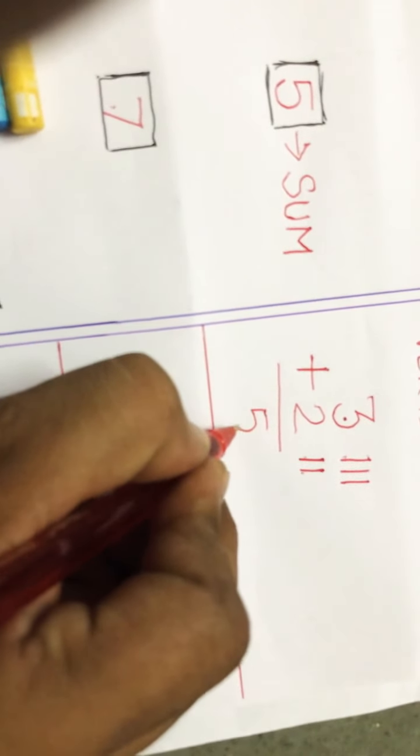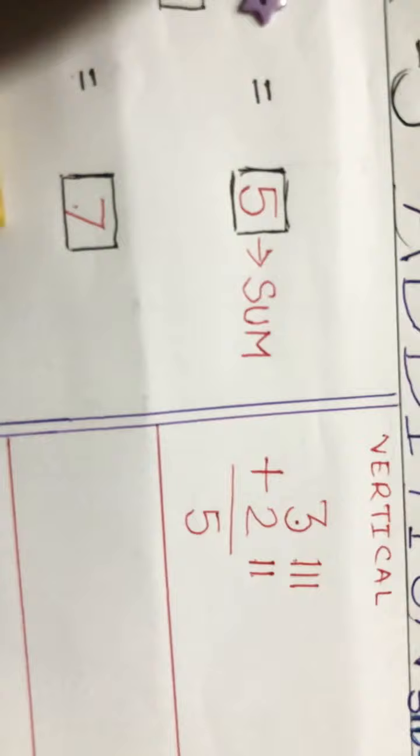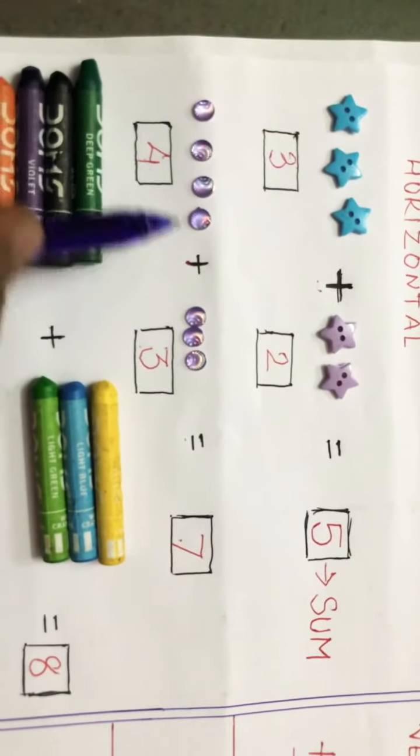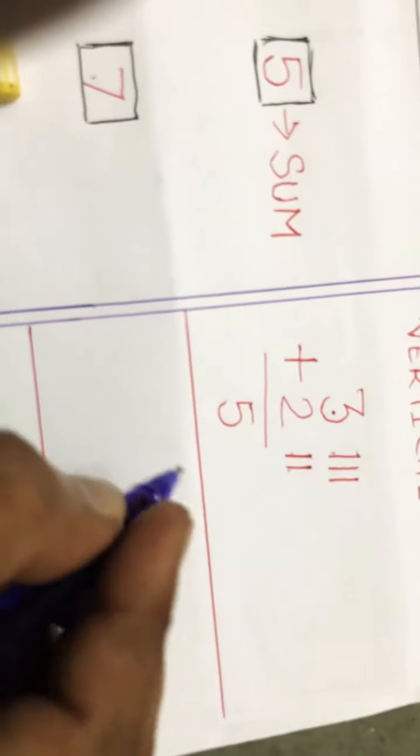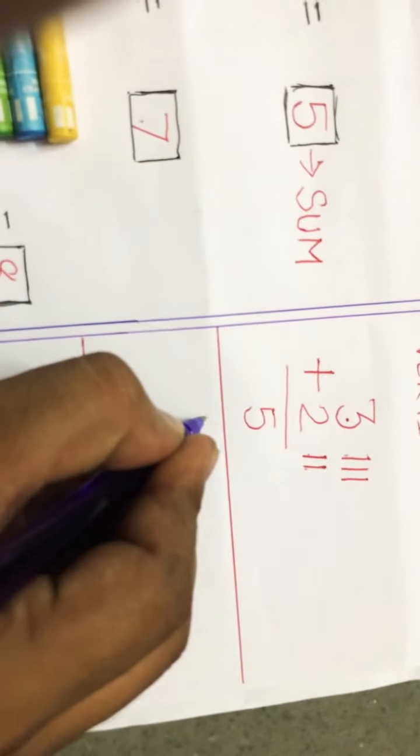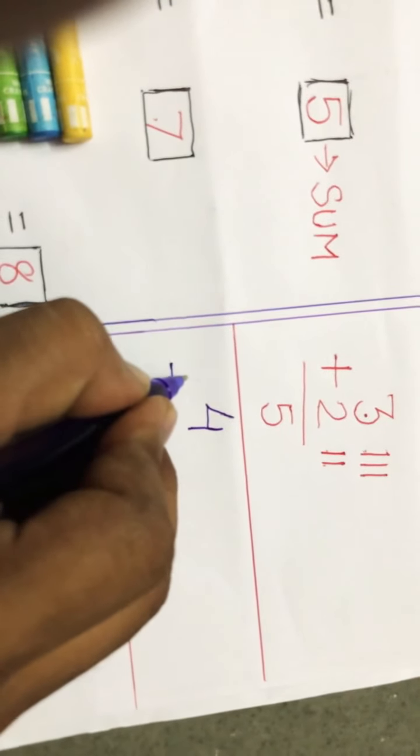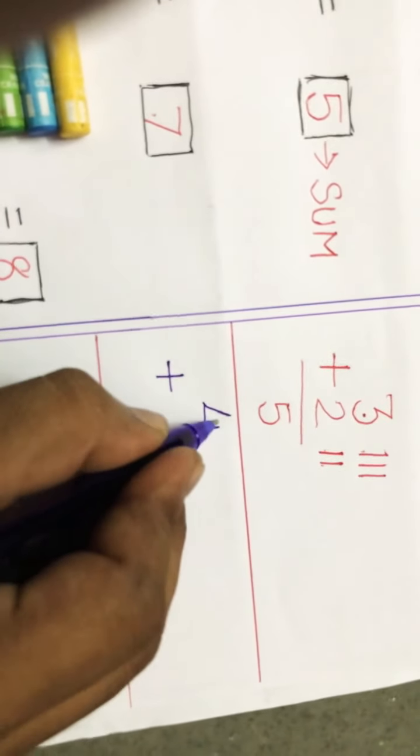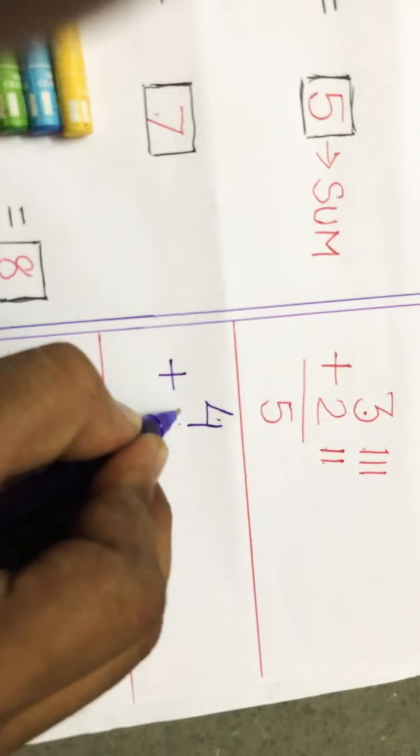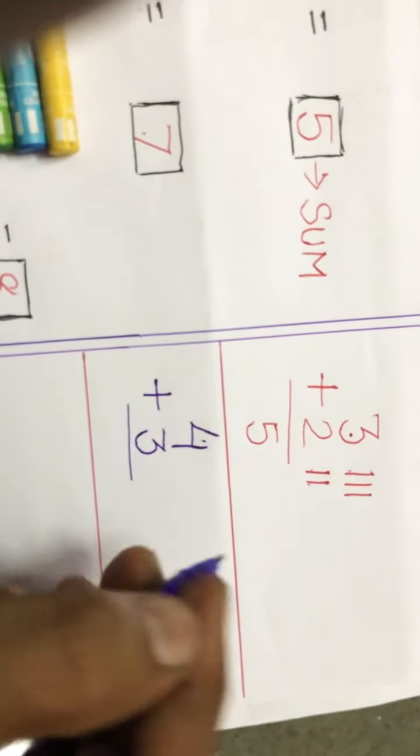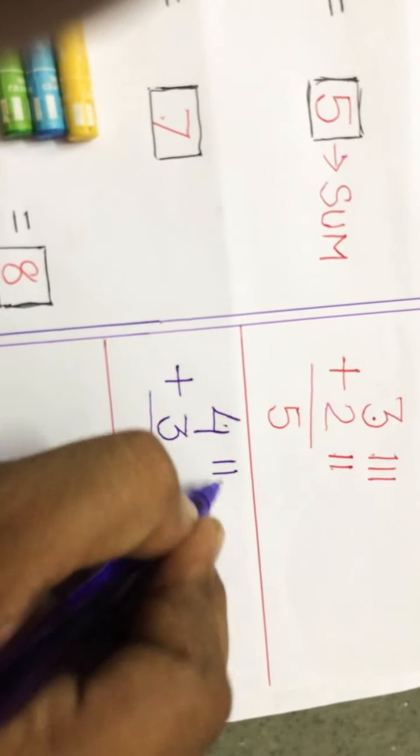Okay, now see this one. We'll do four plus three, so first we'll write four, then three. Don't write just anywhere, write it exactly in the right place. Now draw here vertical four lines: one, two, three, four.